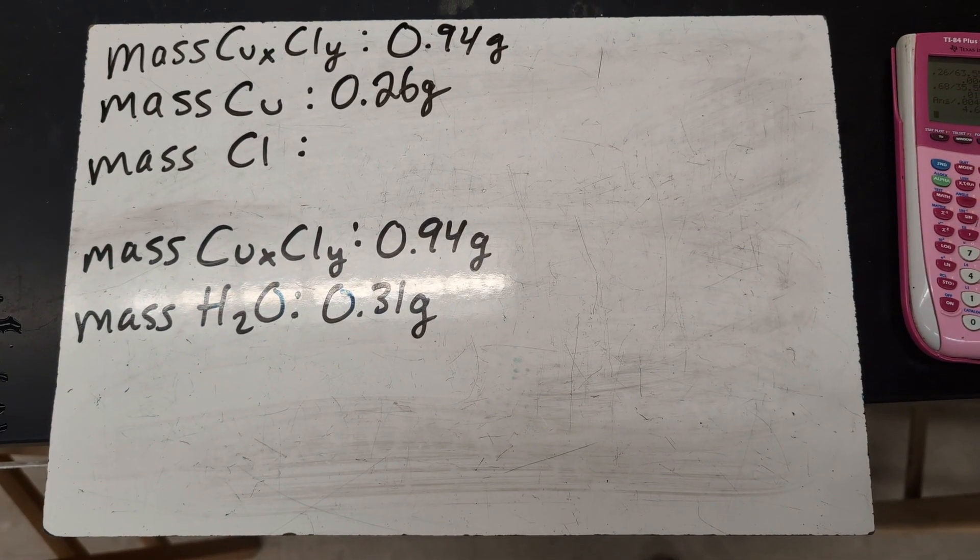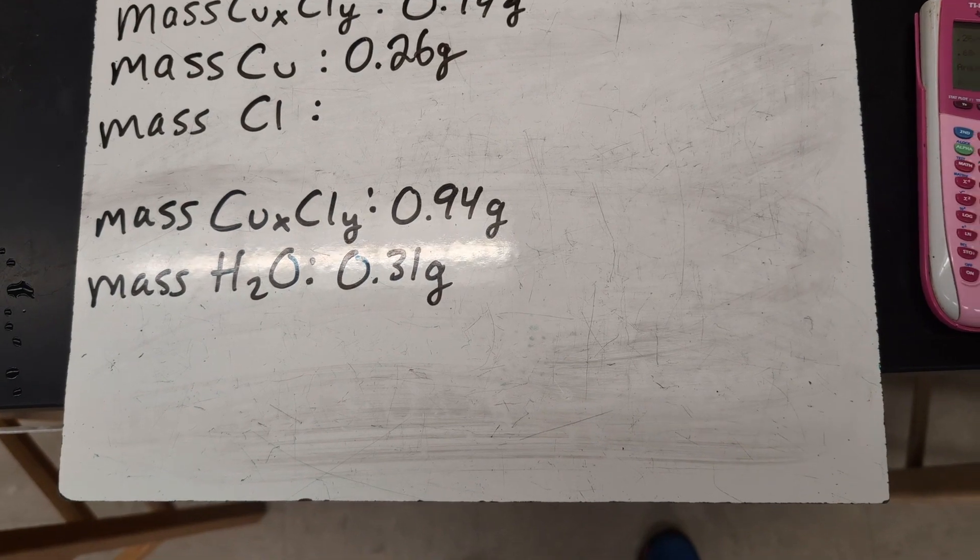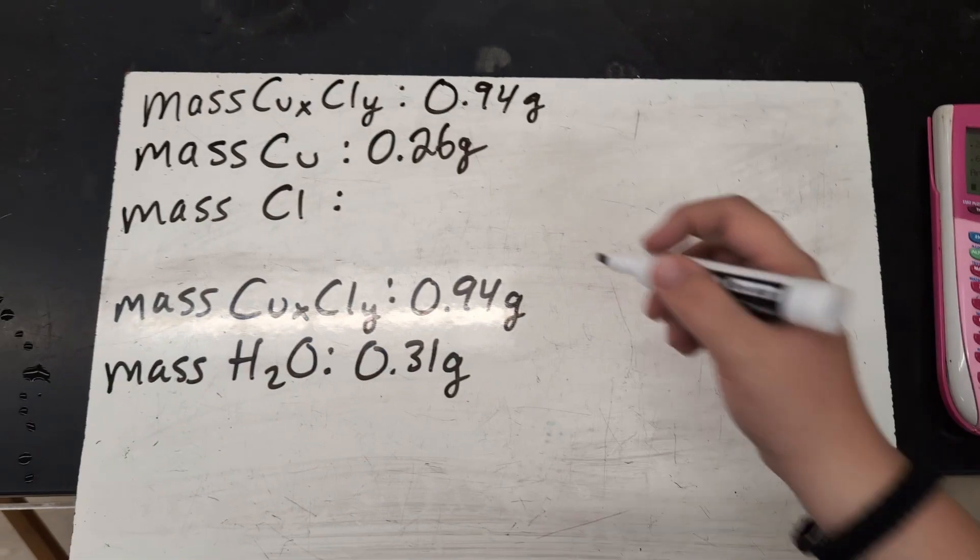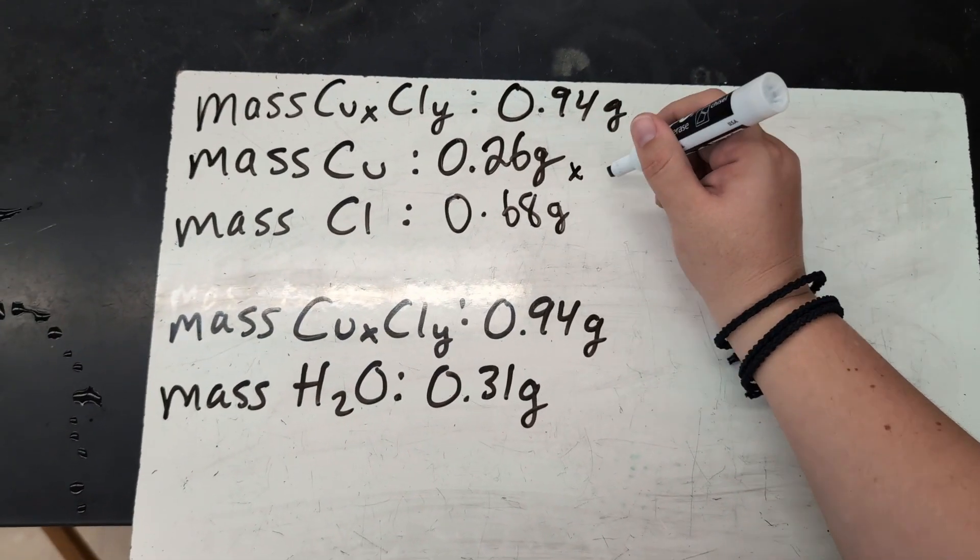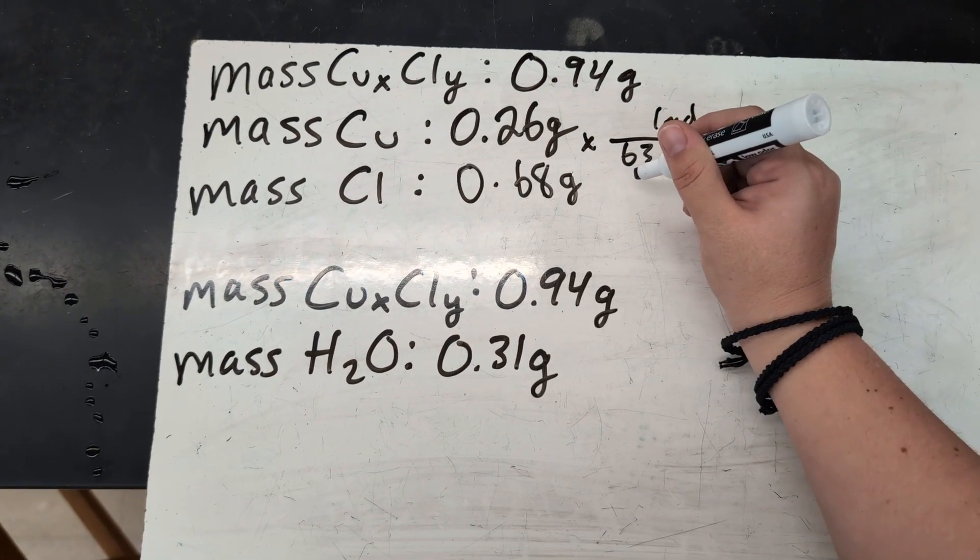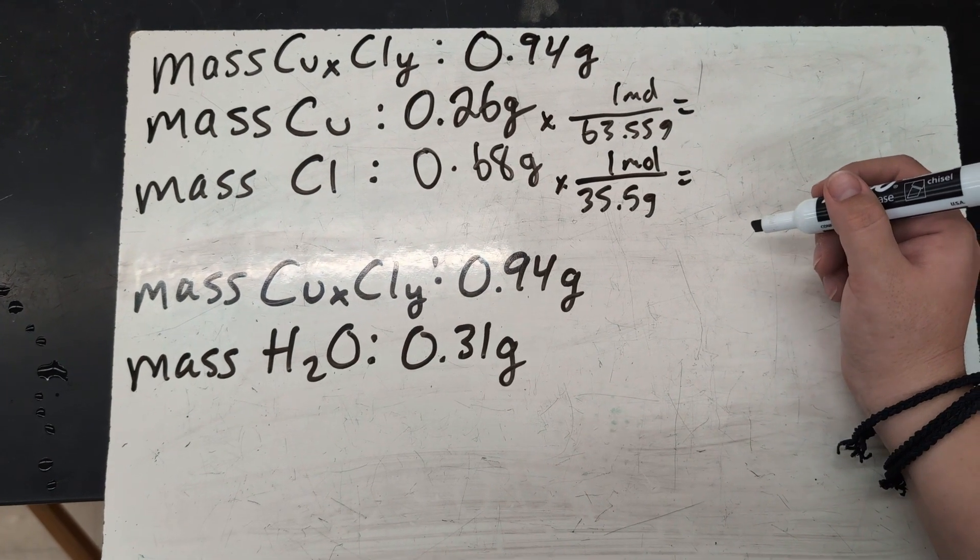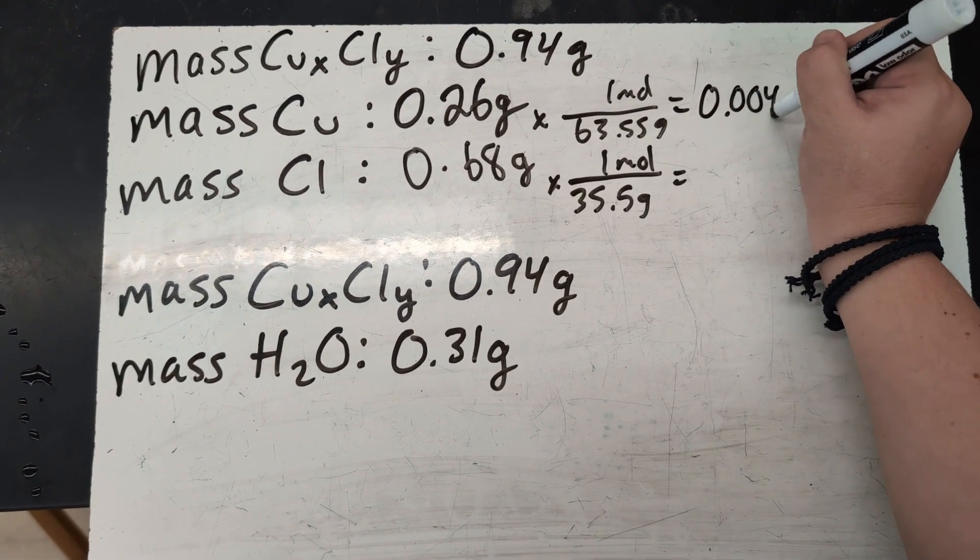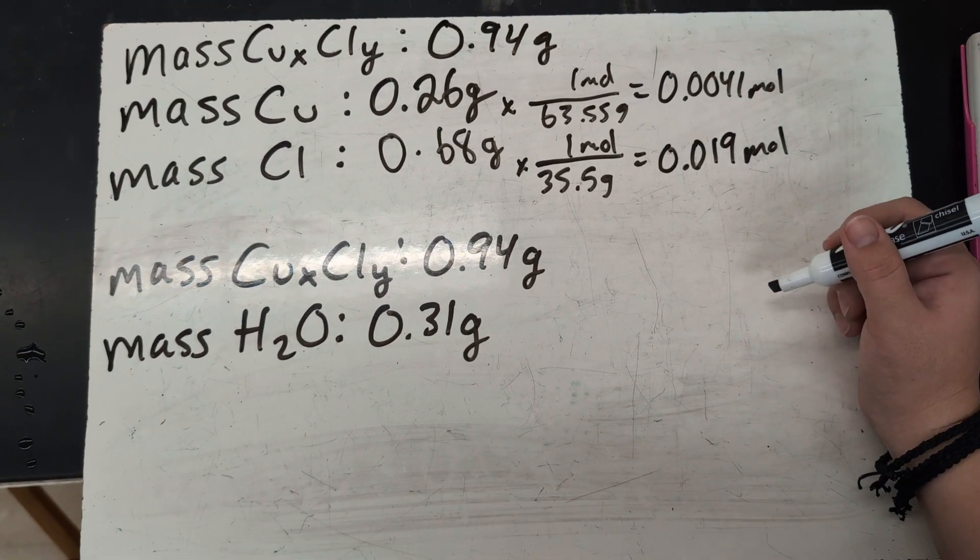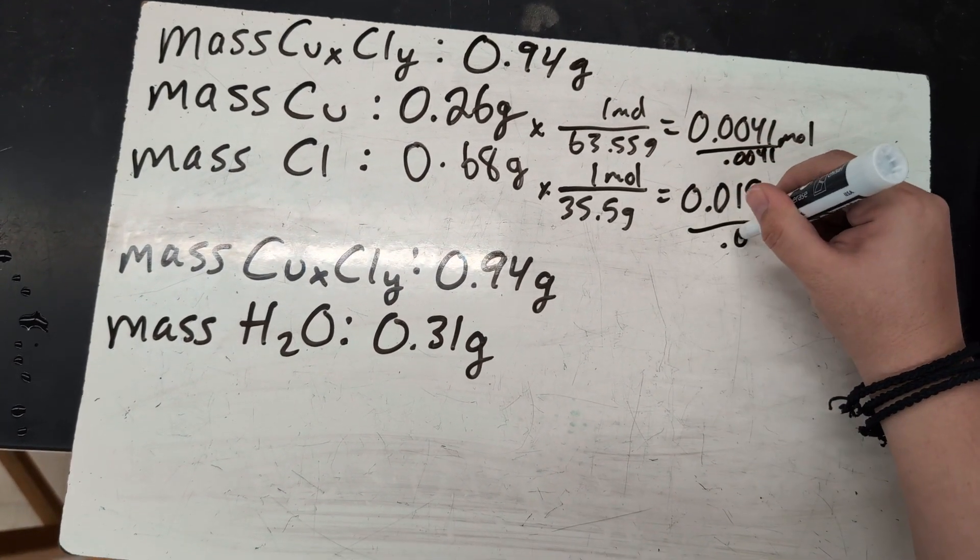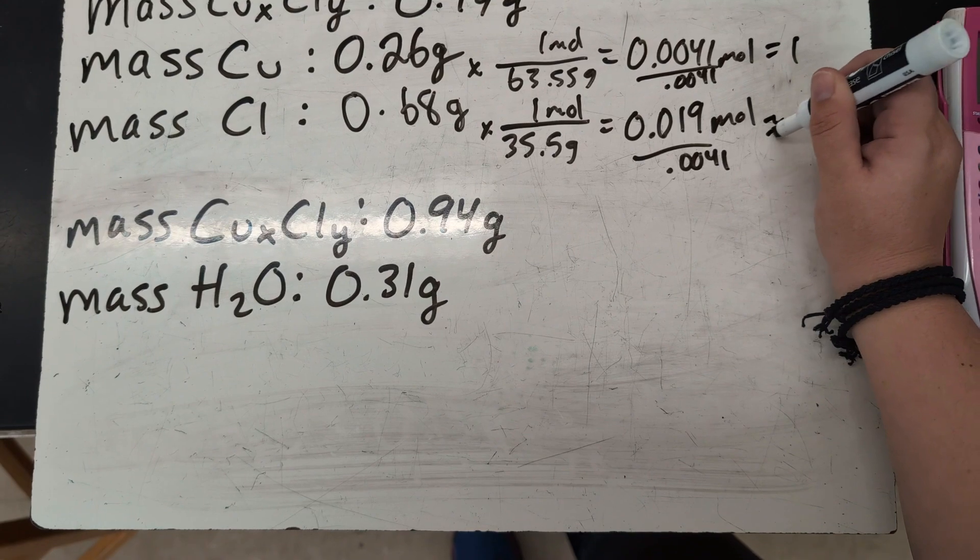So let's go ahead and start to figure out our empirical formula. We have the original mass of the anhydrous, so just after dehydrating it, was 0.94 grams. And after filtering and drying, our mass of solid copper was 0.26. If you subtract that, you'll get the mass of chlorine, which was 0.68 grams. So then we need to change grams to moles using their molar masses. Copper is 63.55. And chlorine is 35.5. So when you divide there, the moles of copper is 0.0041. And for chlorine is 0.019 moles. Then to find the ratio, you divide by the smallest. So we're going to divide by 0.0041. And we get exactly one. This one is just about a 1.25 relationship.